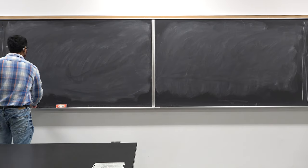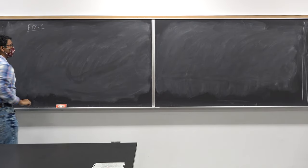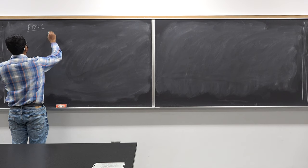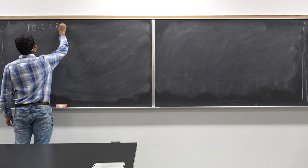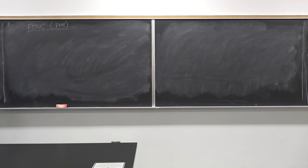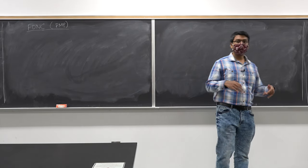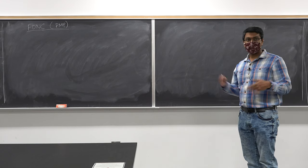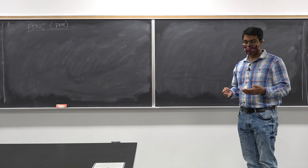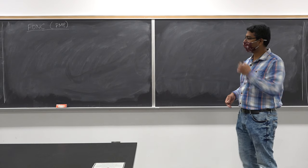Let's talk about the first-order necessary condition for optimality for the dynamic optimization problem, also known as the Pontryagin Maximum Principle. We have calculated in the previous class what the derivative of the aggregate cost is as a function of individual actions throughout the horizon. Now I'm going to introduce the notion of the Hamiltonian so that you can write down the first-order necessary conditions for optimality in a very straightforward manner.